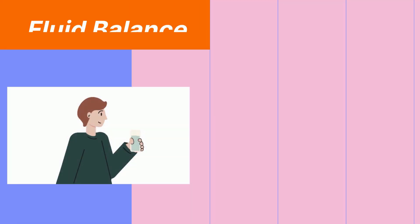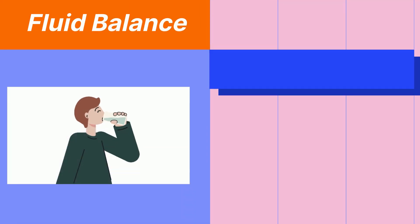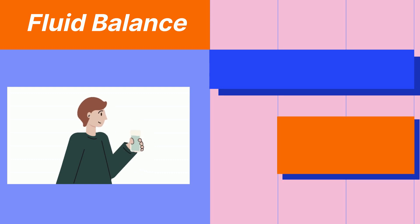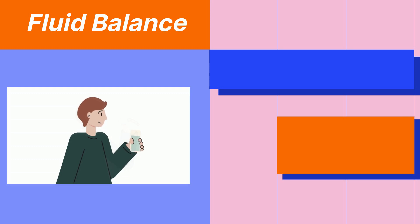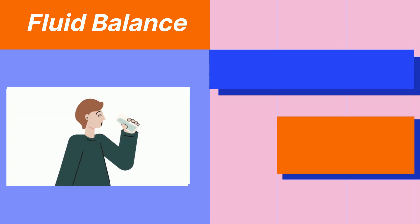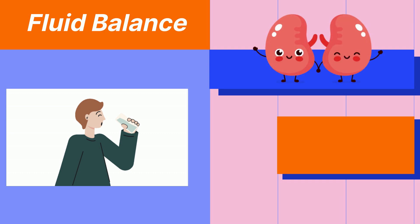Fluid balance: the body maintains a constant fluid balance by regulating the amount of water that is taken in and out. This is done through the kidneys, which filter out excess water from the blood, and sweat glands, which produce sweat.